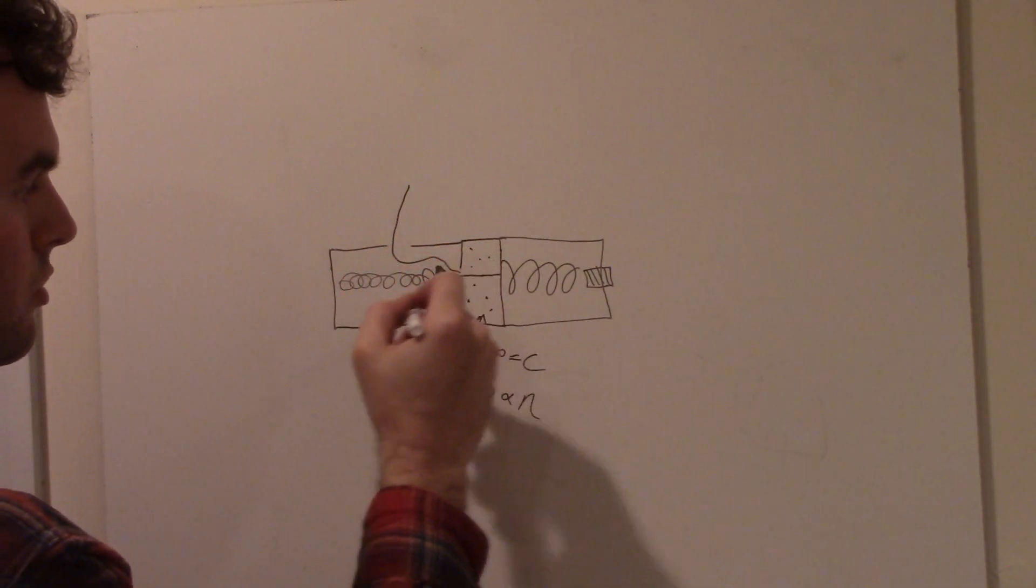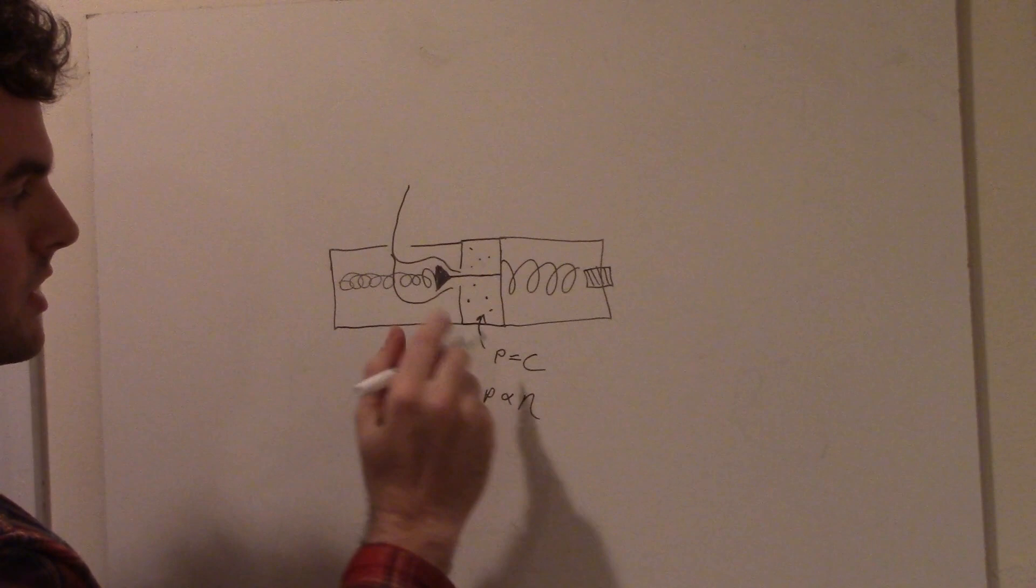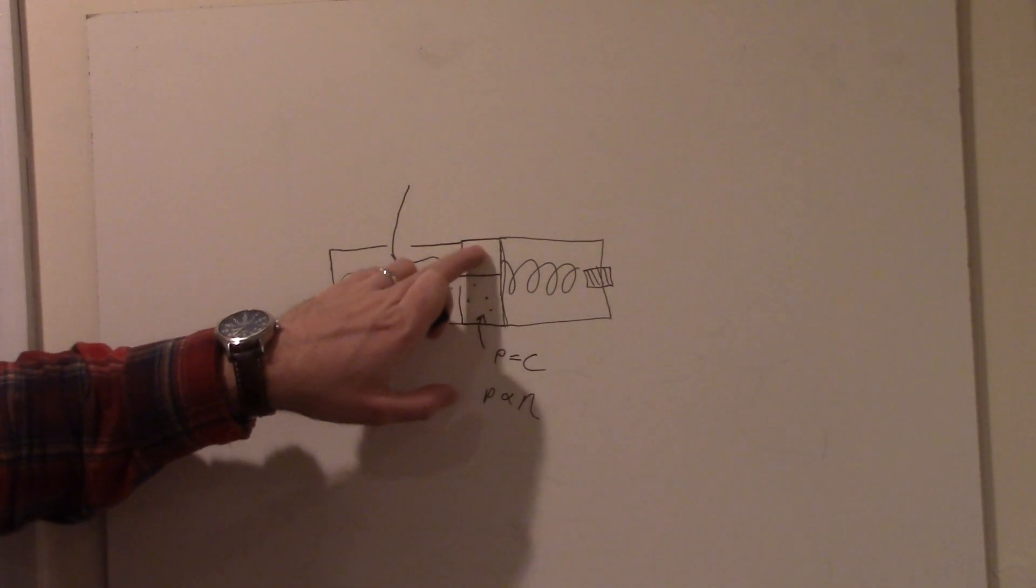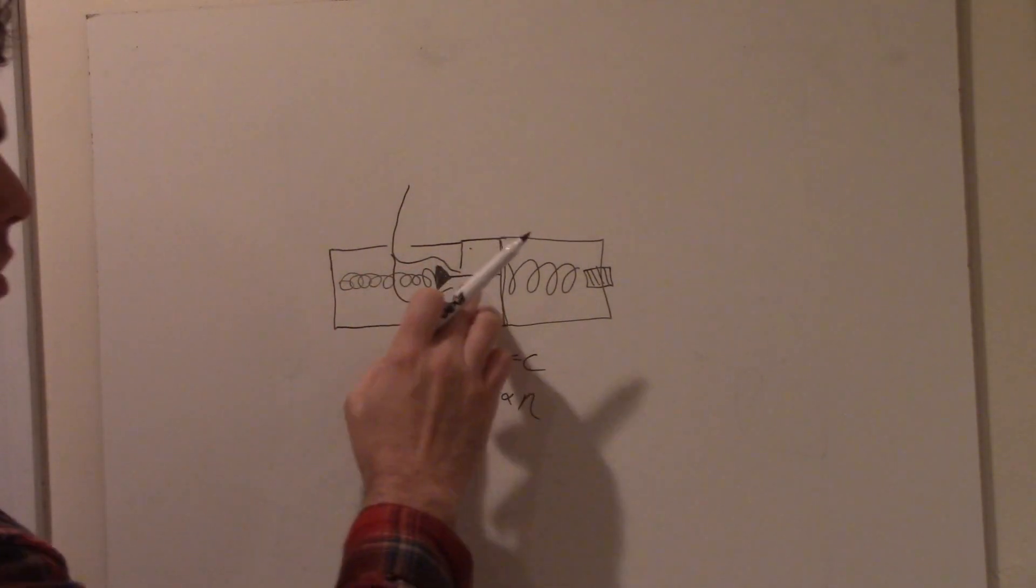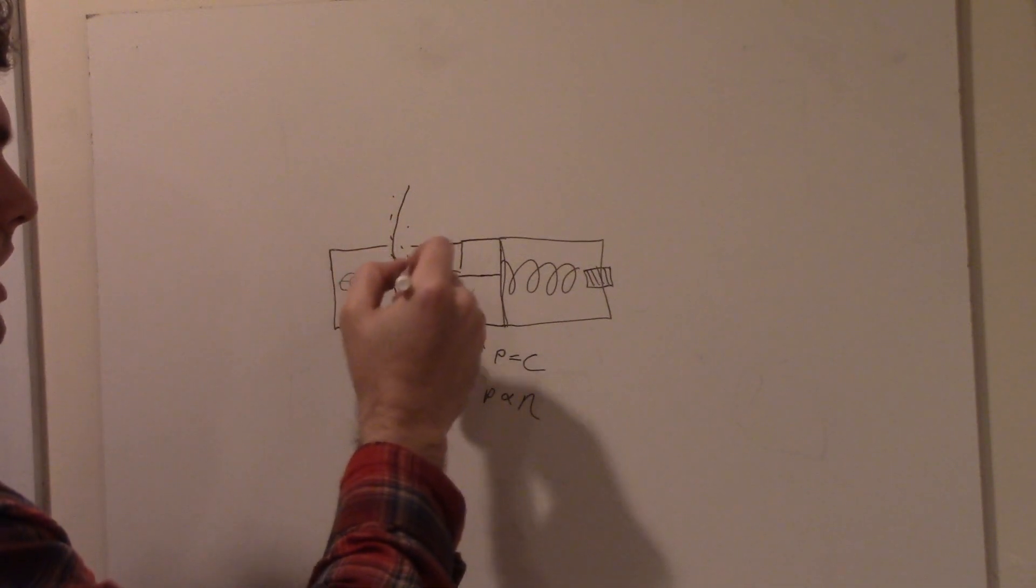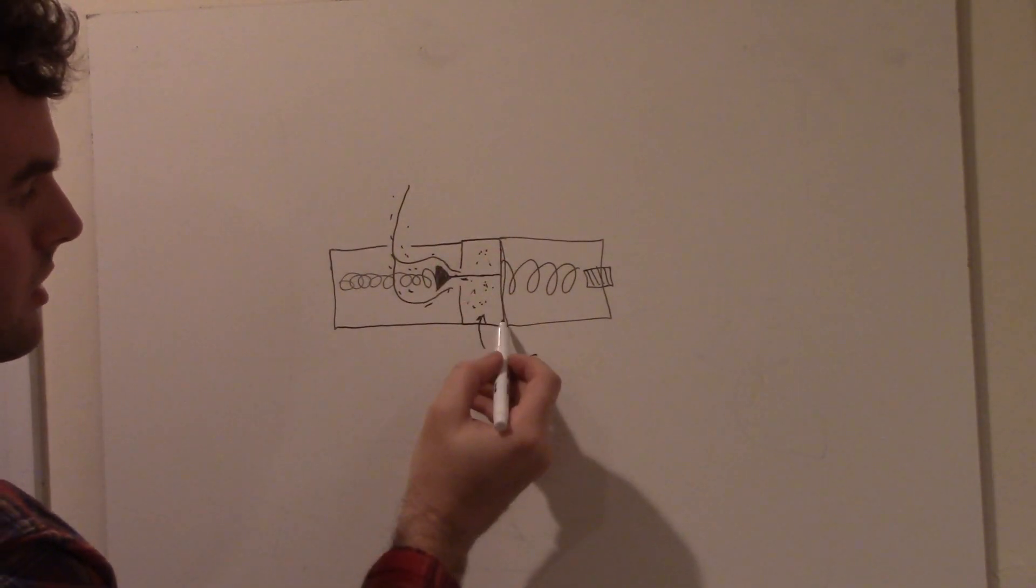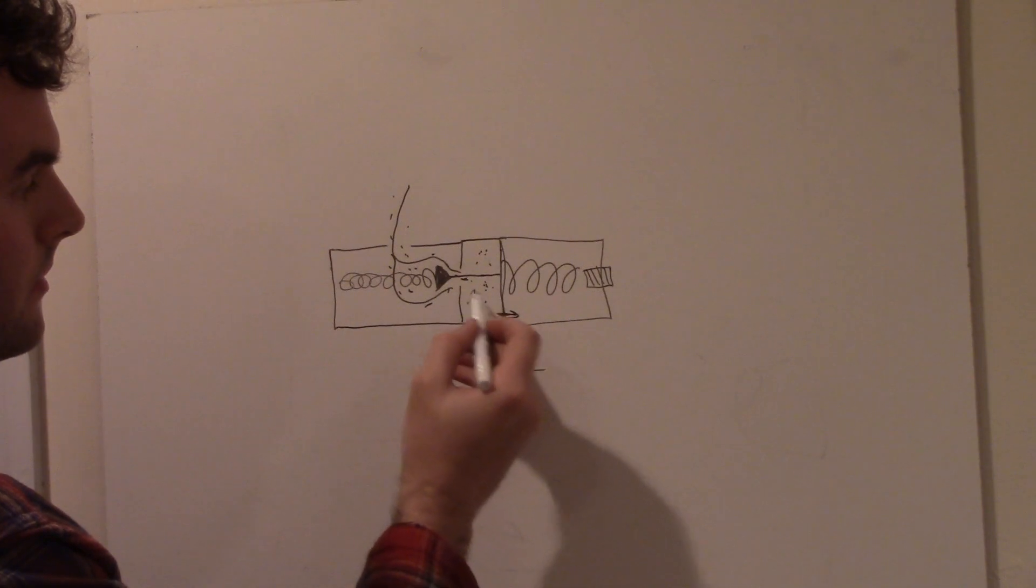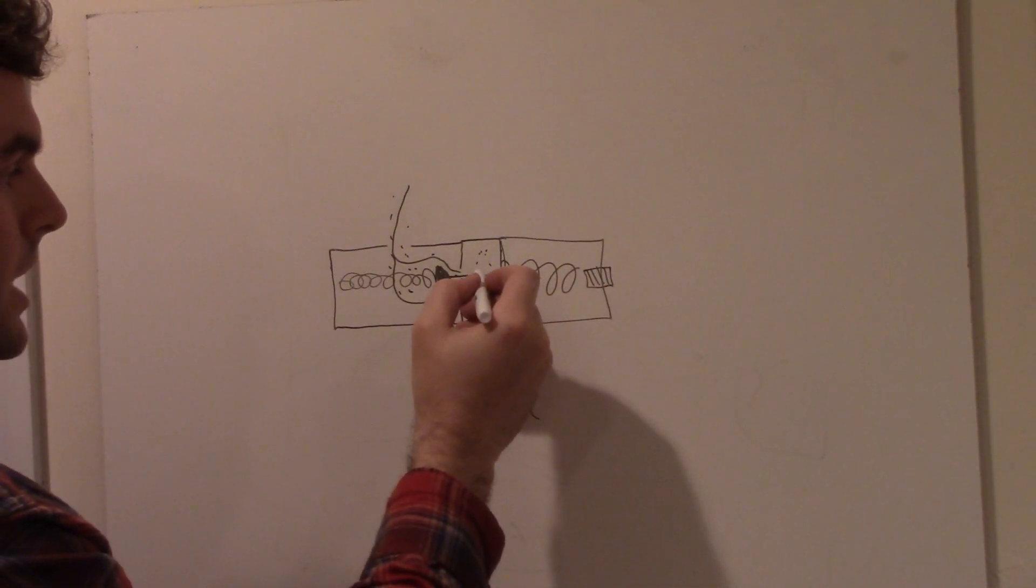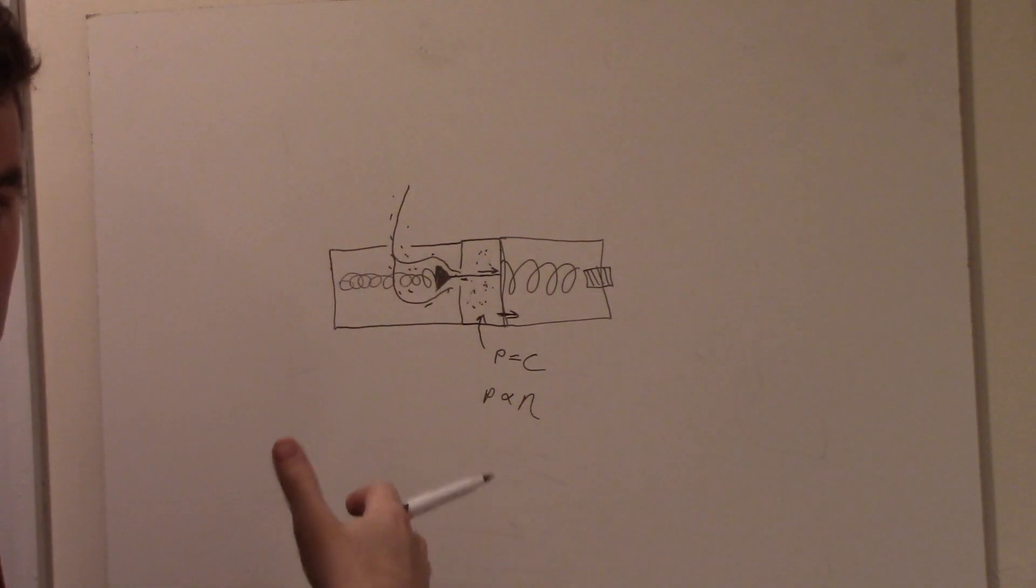The way that that is accomplished is there is a spring which is trying to push this valve closed. So this spring on its own would push this valve, closing up this hole and preventing any more gas from flowing through here. But there is a stronger spring which is pushing on this diaphragm here that's trying to keep the valve open. Without any pressure in here, with no gas molecules or only a few molecules, this valve is open.